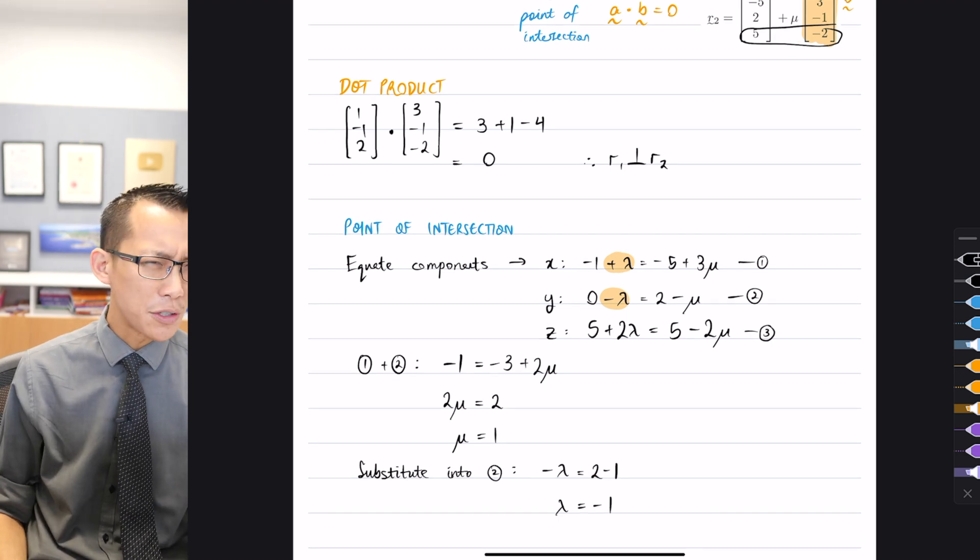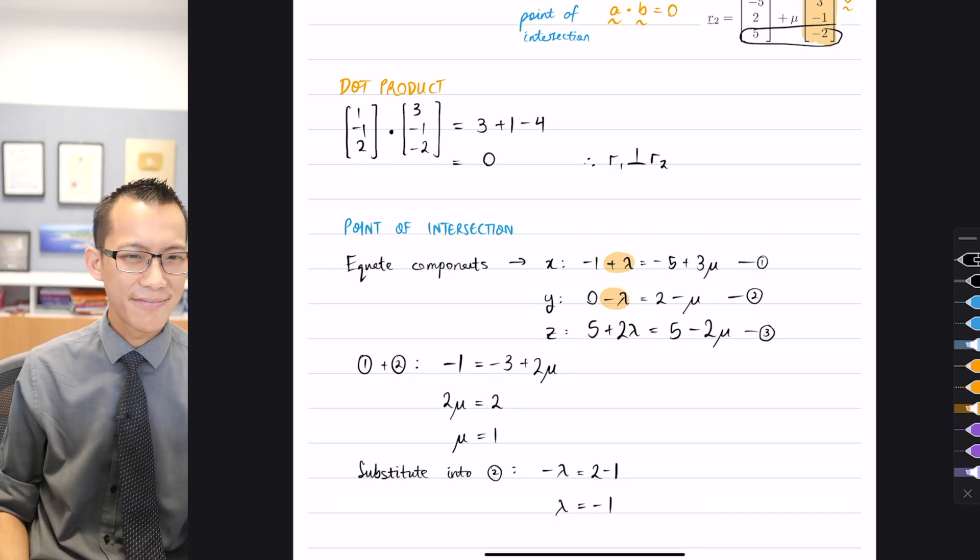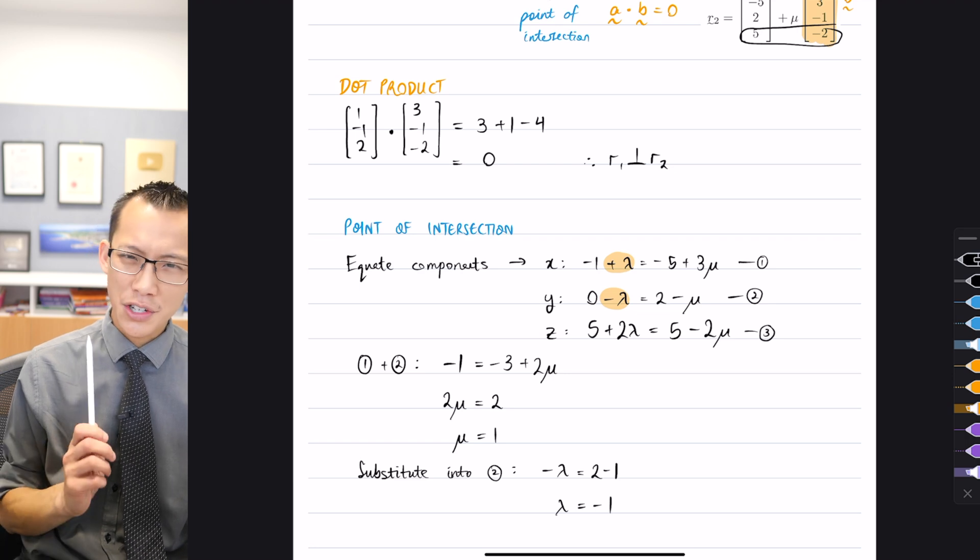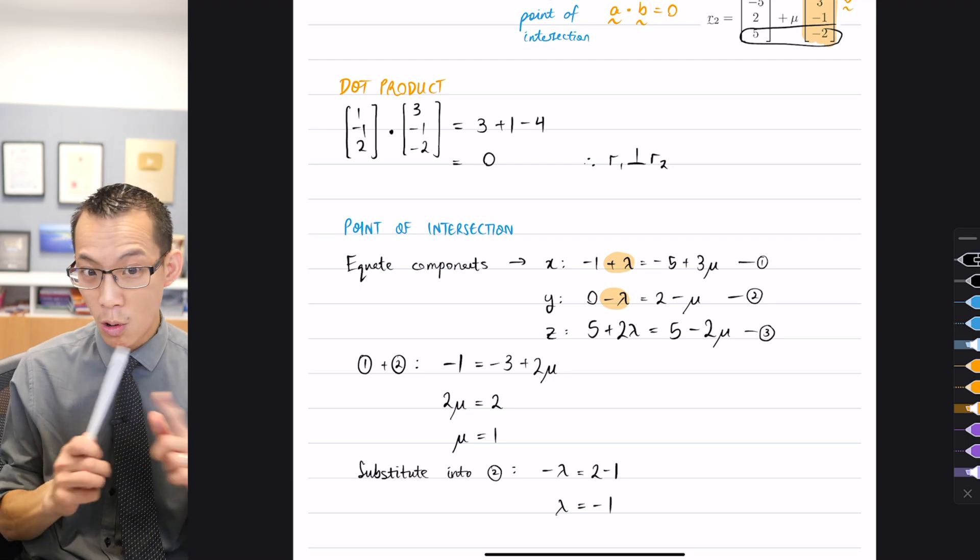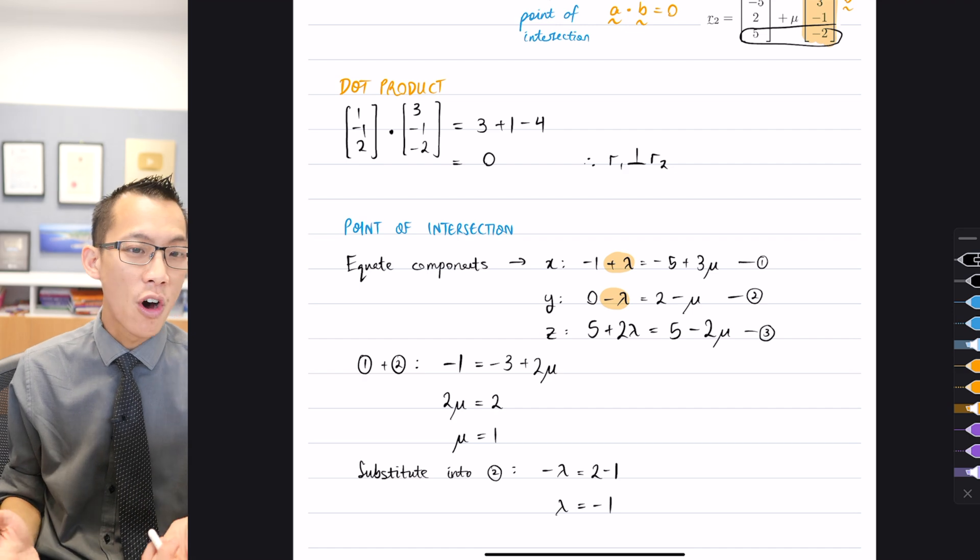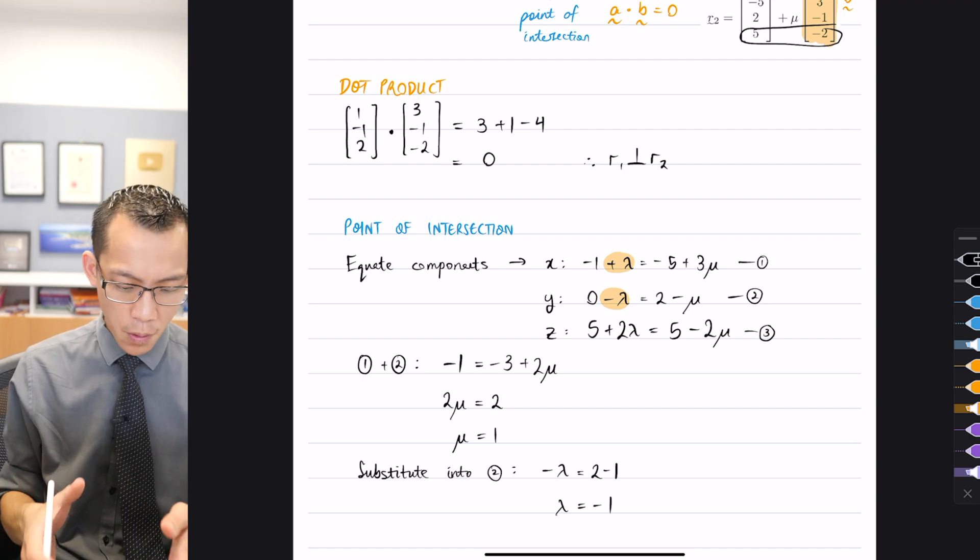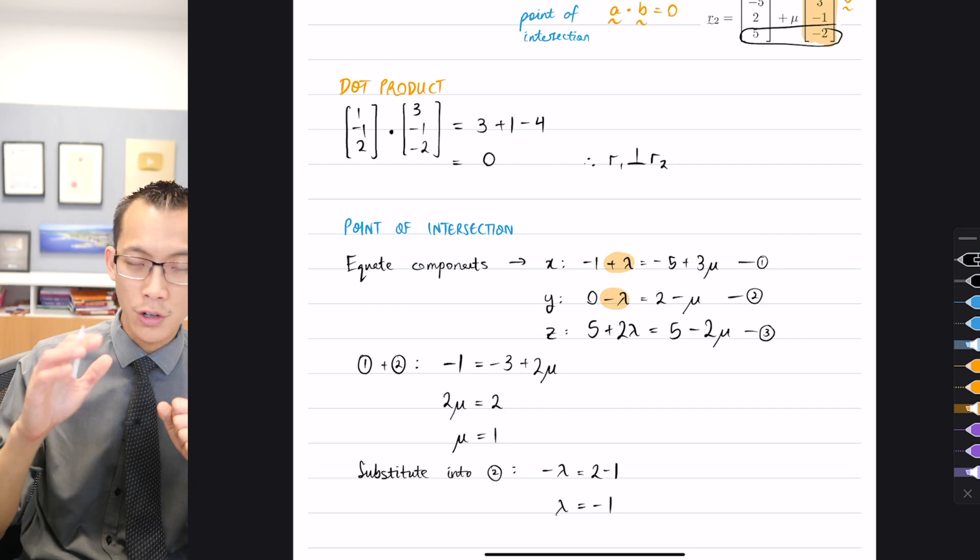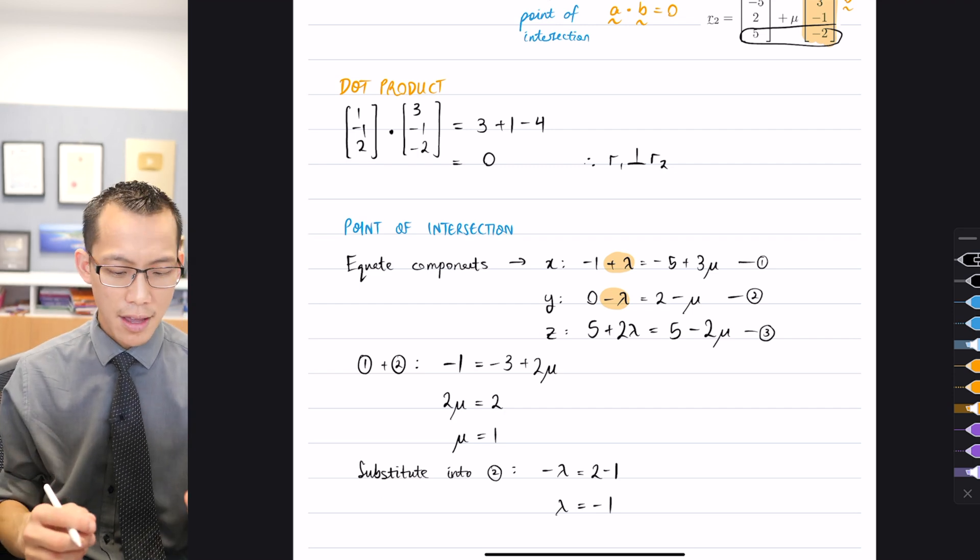Let me pause. What were we trying to do again? We want to show that they intersect, or alternatively they may not, right? Now at this point I've got a lambda, I've got a mu.